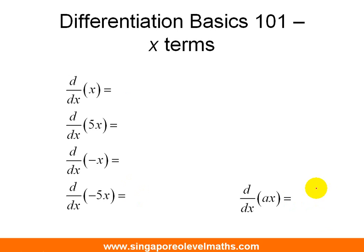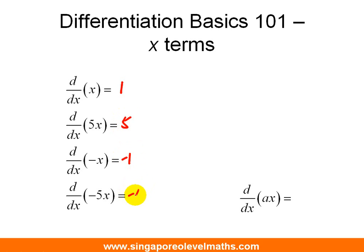What happens if you need to differentiate an x term? Differentiation of x will give you 1. Differentiation of 5x gives 5. Differentiation of minus x gives minus 1. And differentiation of minus 5x gives minus 5. So in summary, to differentiate any x term — for example, ax — your answer will be a.